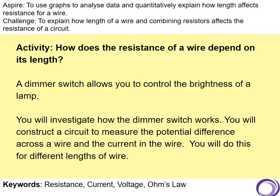So, how does resistance of a wire depend on its length? A dimmer switch allows you to control the brightness of a lamp and sometimes we have those in our rooms, in our houses. Today's lesson you're going to investigate how the dimmer switch works. You will construct a circuit to measure the potential difference across a wire and the current in a wire. And you'll do this at different lengths of a wire.